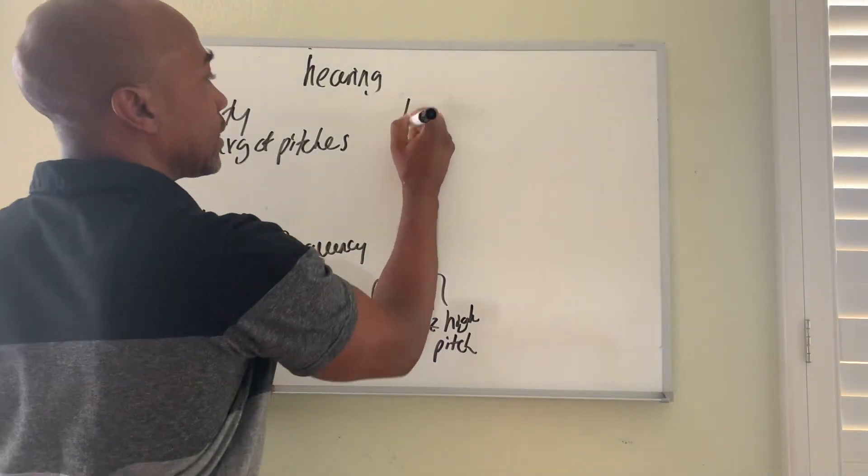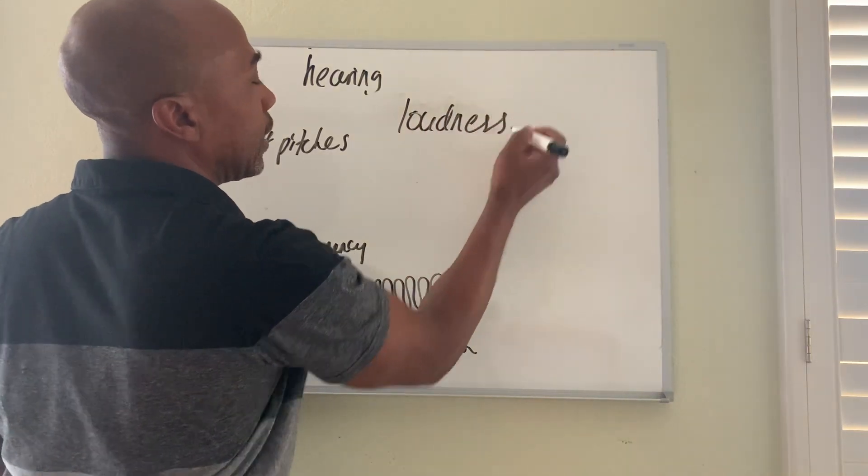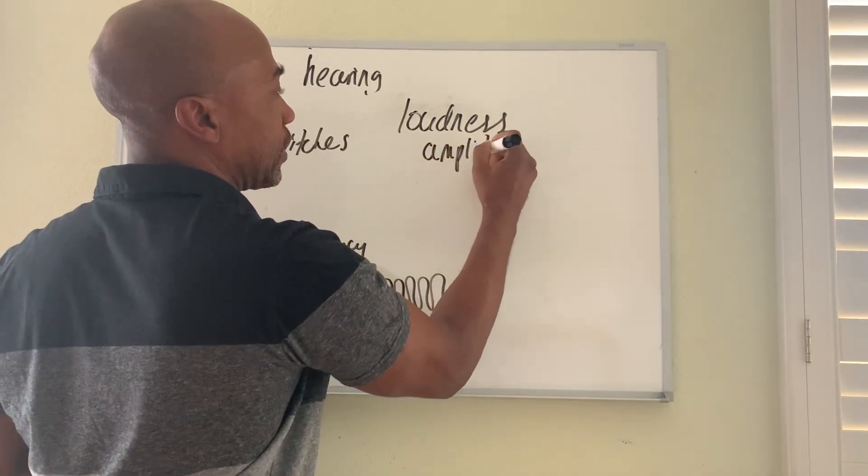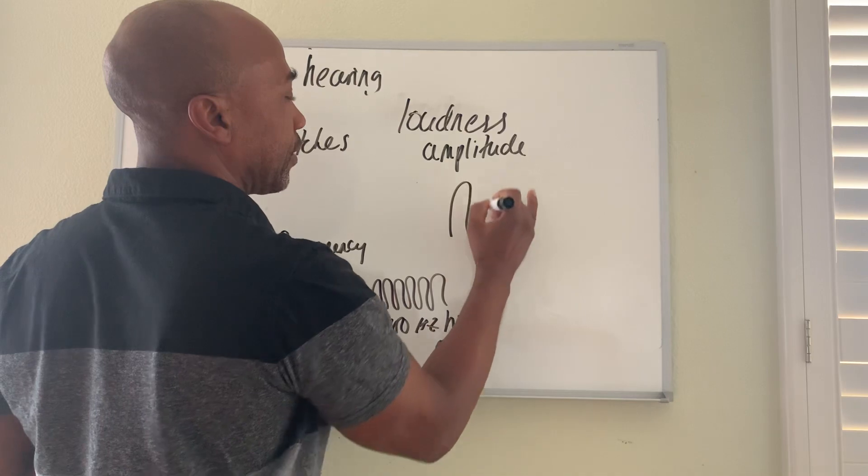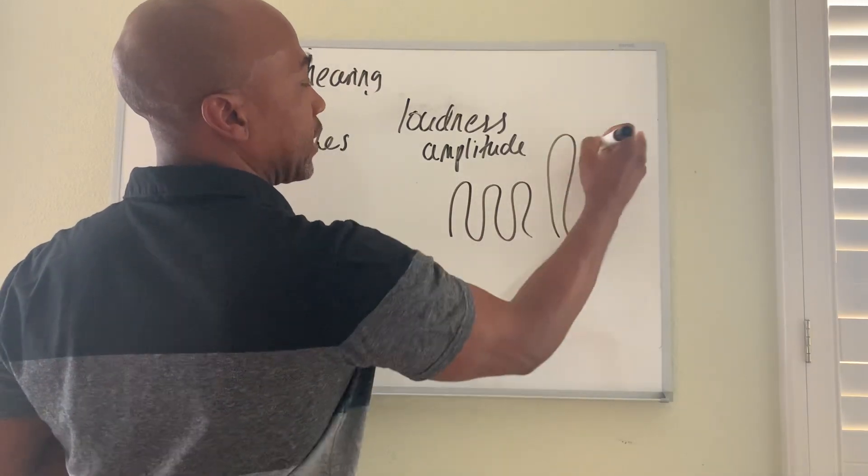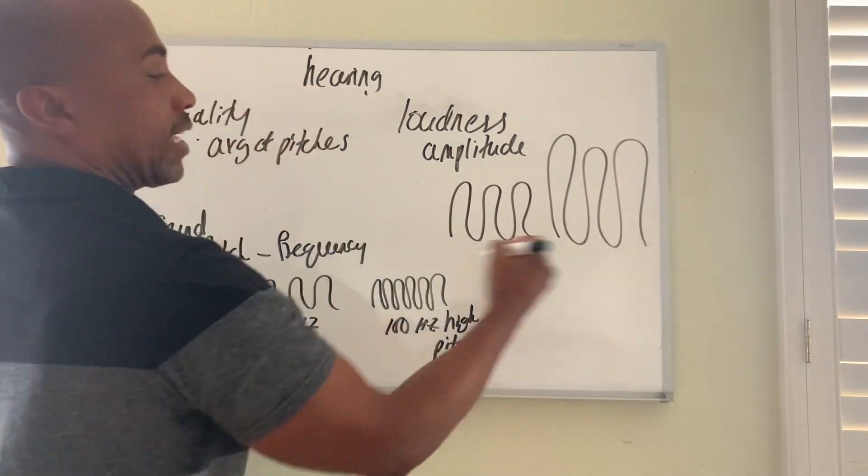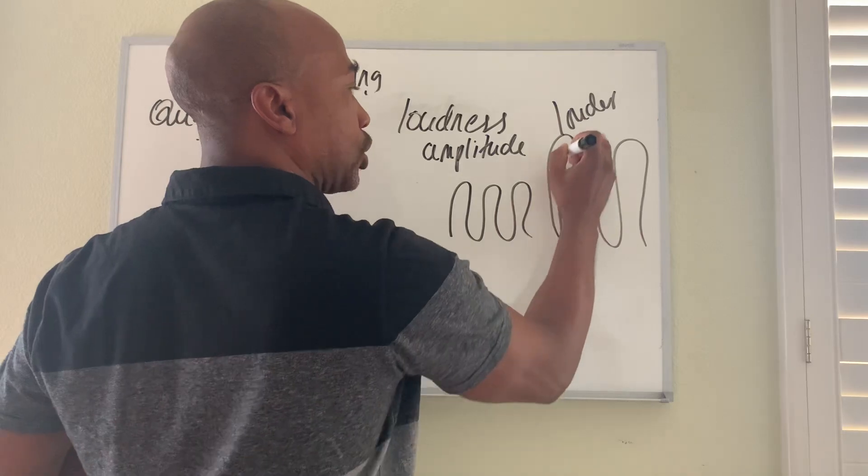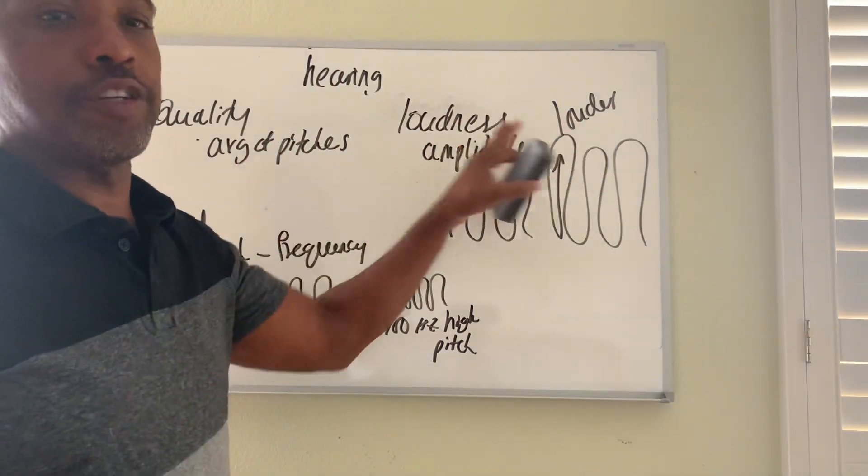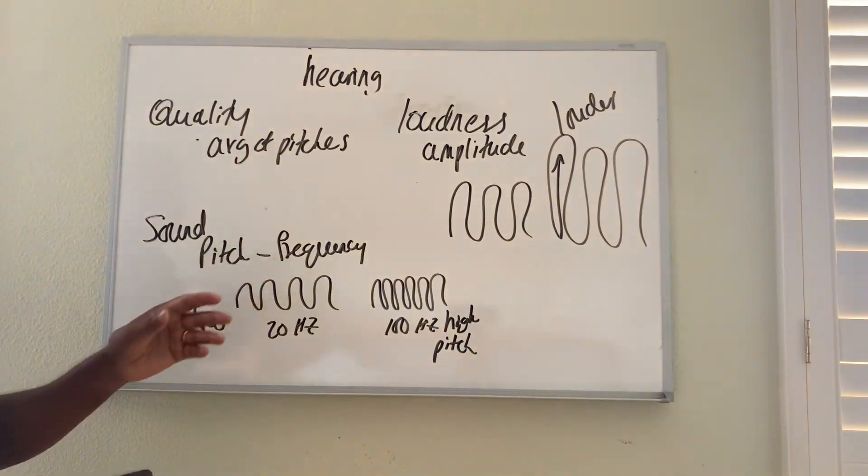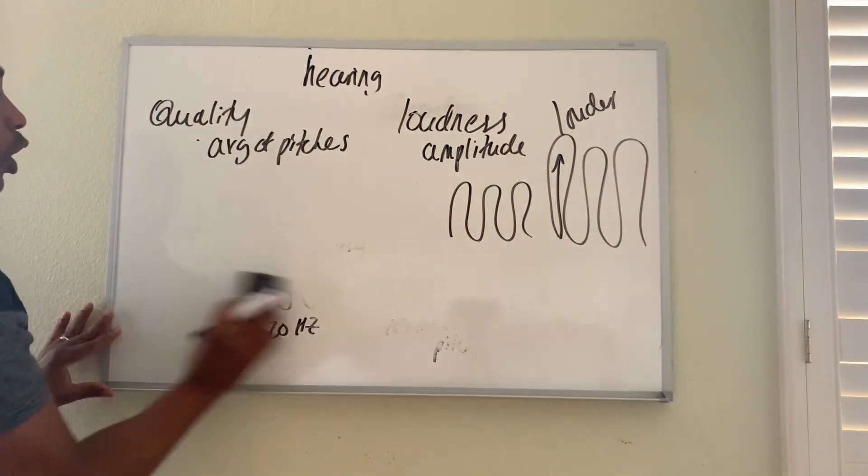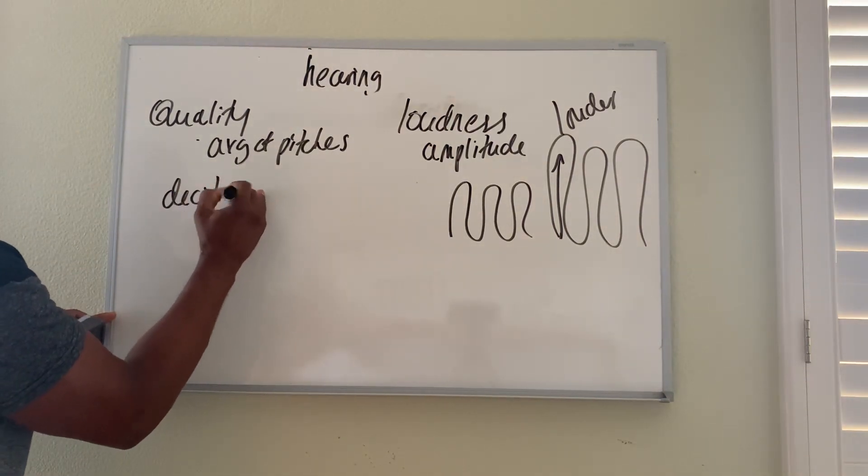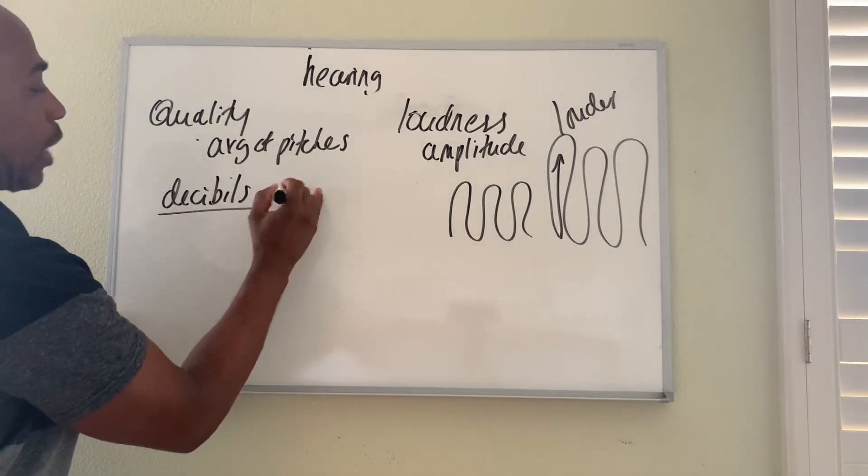Then loudness refers to how big the waves are, what's called your amplitude of waves. So this wave compared to this wave, they're the same frequency, but this is louder. So bigger amplitudes of waves create louder sounds. And we measure loudness of sound on a scale called the decibel scale. Decibels scale that measure loudness for us.